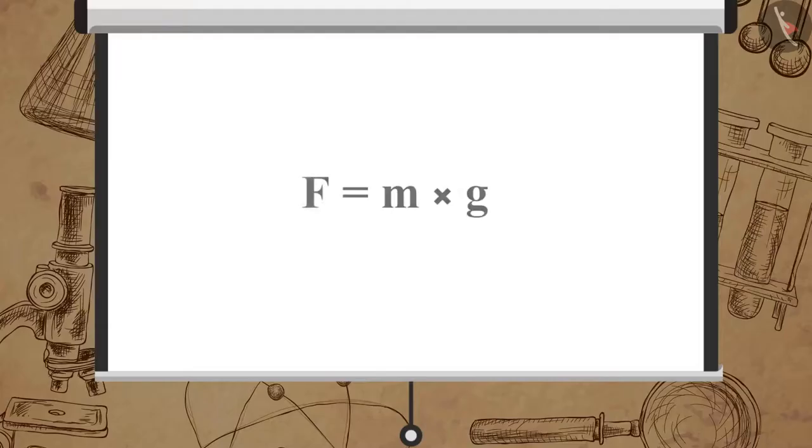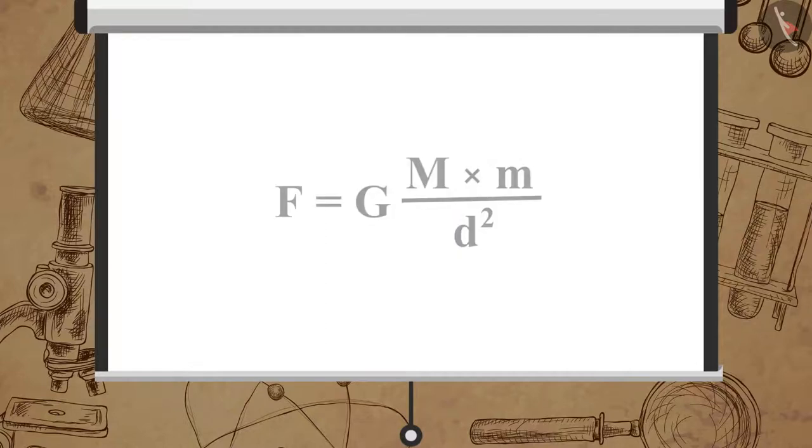So, the magnitude of the gravitational force, F is equal to M multiplied by g. As we learned in the previous video, F is equal to GM multiplied by M upon d square.